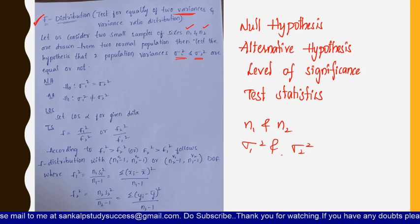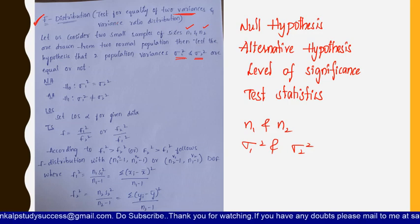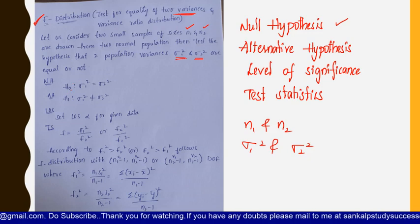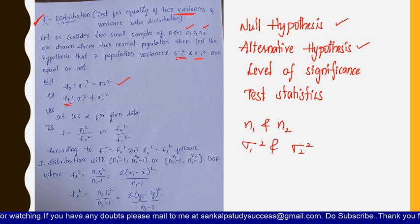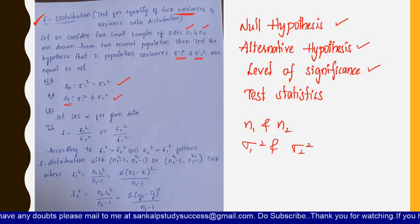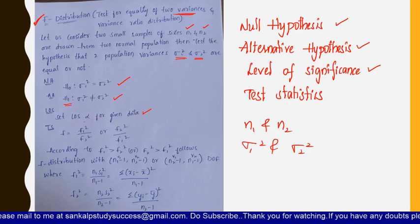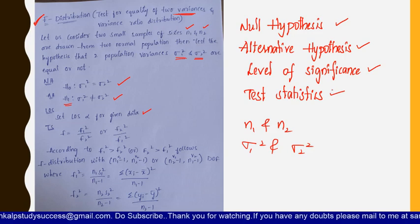We determine whether the variances are equal or not using the following steps. Step 1 — Null hypothesis: H₀ is sigma one squared equals sigma two squared. Step 2 — Alternative hypothesis: H₁ is sigma one squared not equal to sigma two squared. Step 3 — Level of significance: this is directly given in the question and we substitute that value.